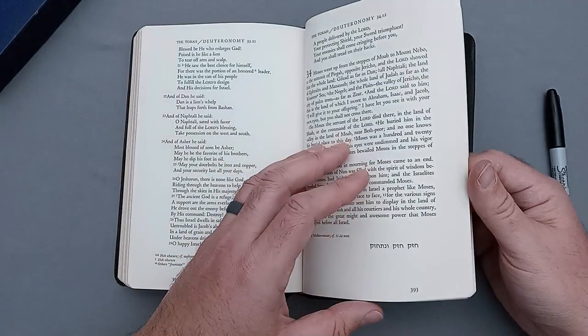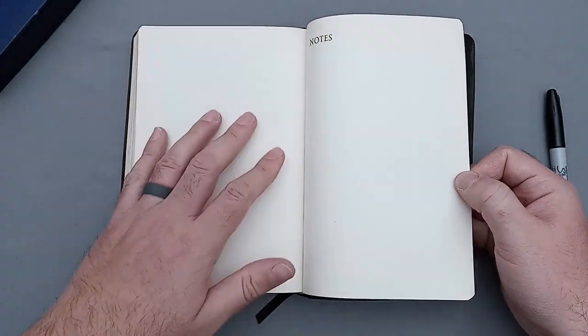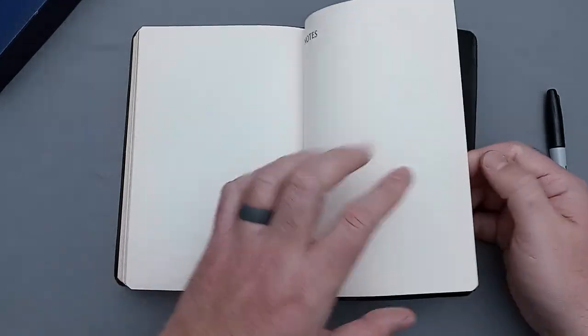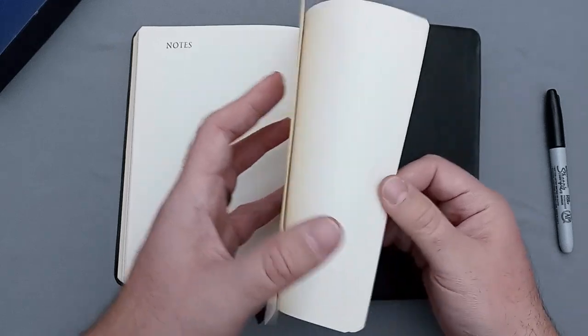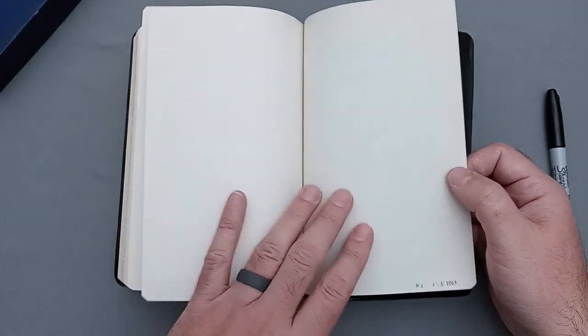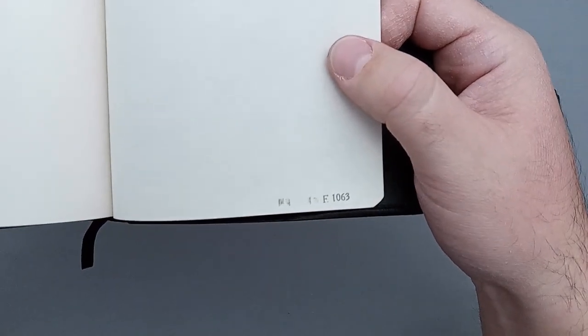Let's go to the end. I don't think there's much. You have the end of Deuteronomy here, a blank page, and then you do have a page here listed notes. They give you a few of those if you want to take any kind of notes on the biblical text. One, two, three, four, five, six, maybe seven sheets for notes, so quite a good bit of notes paper there. On your end sheet you have a little code there, E1063 is what it looks like.